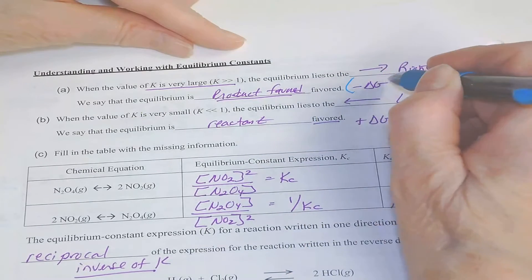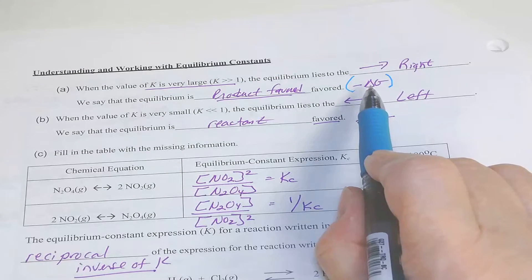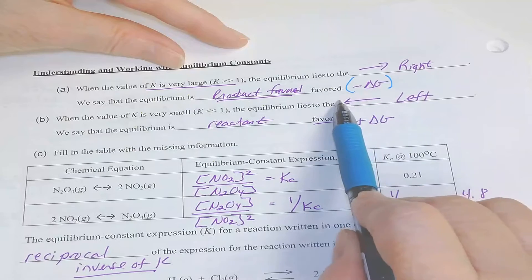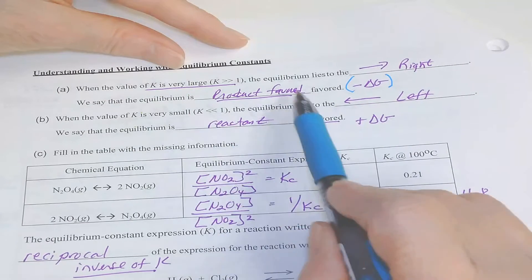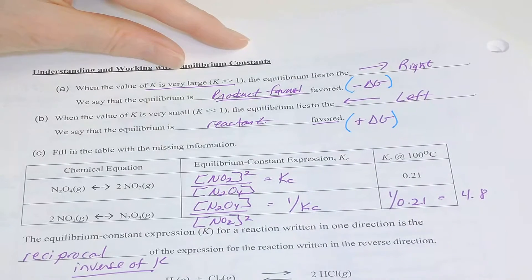And of course in our last chapter, that means it's more thermodynamically favored with a negative delta G. When your K is much less than 1, your equilibrium lies to the left, meaning that you are reactant favored or non-thermodynamically favored.